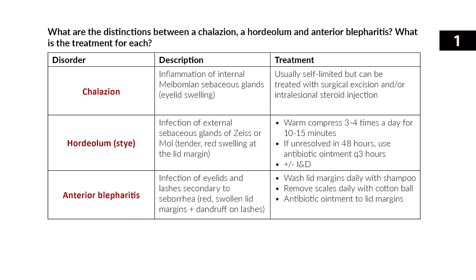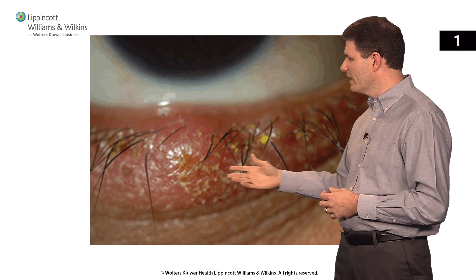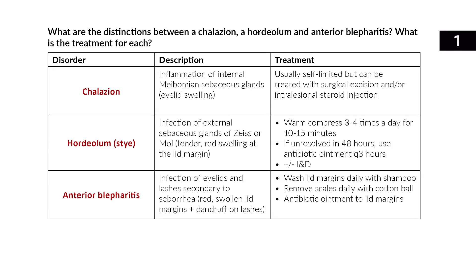Anterior blepharitis can either be due to infection of the eyelid and lashes from staph aureus, where the lid is swollen and red or golden crust forms, or it can be a form of seborrheic dermatitis of the lid and lashes with greasy scales and dandruff around the lashes. Treatment includes washing the lid margins daily with a gentle shampoo, gently removing the scales with a cotton ball, and applying antibiotic ointment to the lid margins.